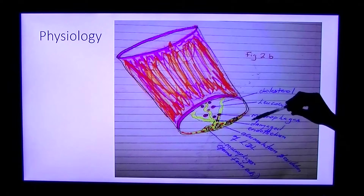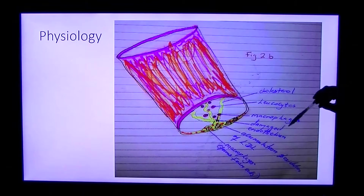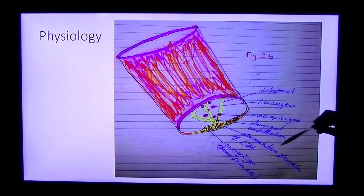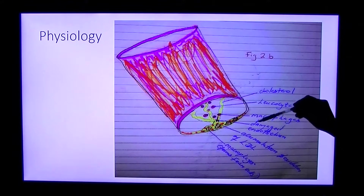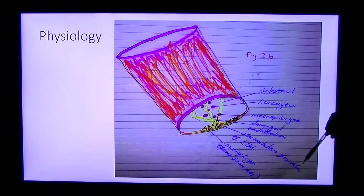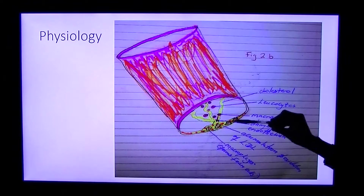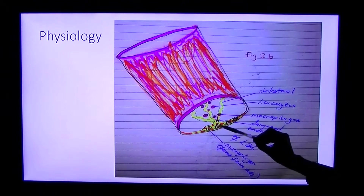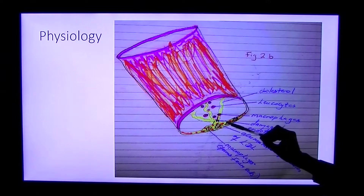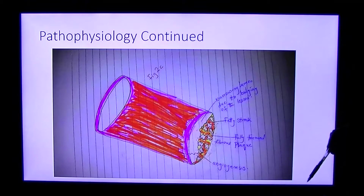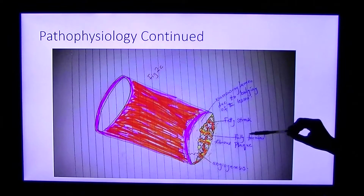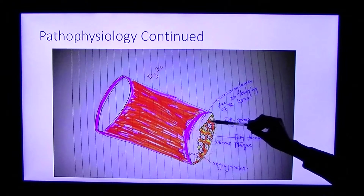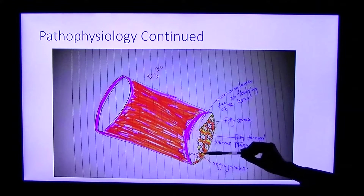The altered LDL then attracts leukocytes to the site, and macrophages appear. The macrophages engulf the lipoprotein and become foam cells. As you can see here, the foam cells are beginning to form. These foam cells give rise to the earliest visible form of atheroma lesion called the fatty streak.